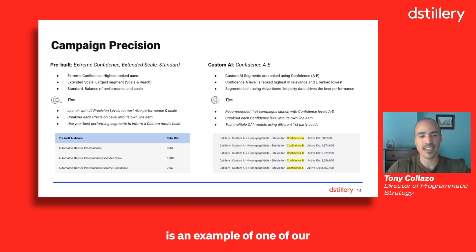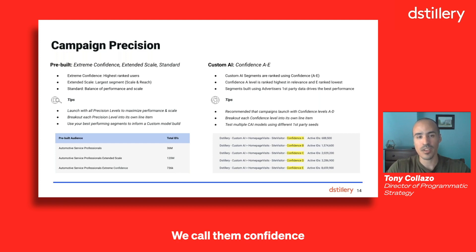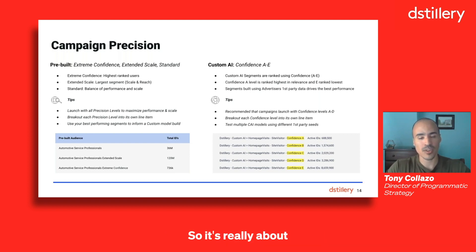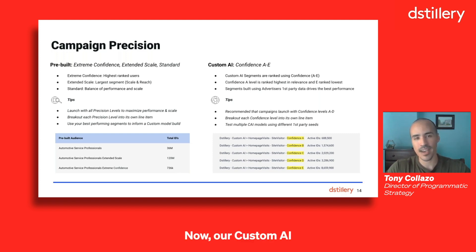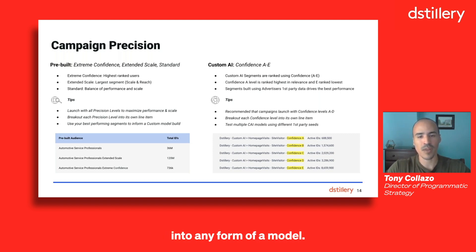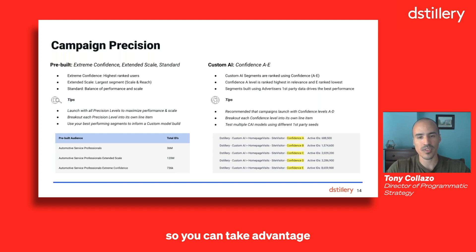Moving over to the right-hand side is an example of one of our custom AI solutions, also broken out into different levels. We call them confidence levels for custom AI. They are ranked A through E, with A ranking the highest in relevance, and that waterfalls down towards E, where the segment gets larger but the relevance score gets lower. It's really about finding that balance between performance and scale. Our custom AI audience product is based off of an advertiser's first-party data, as first-party data really does drive performance when integrated into any model. If you have access to this data, it's definitely a great idea to get a model built out to take advantage of that performance.